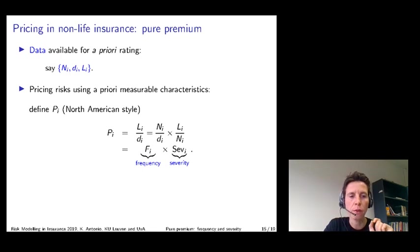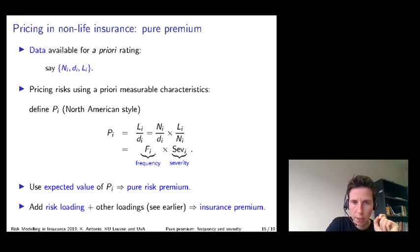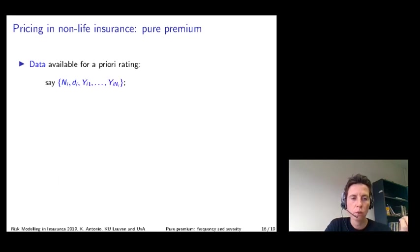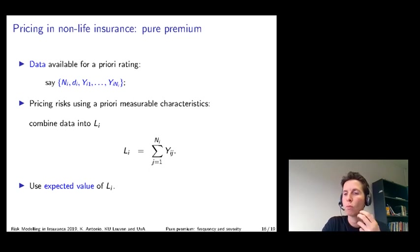The expected value of the random variable P will then give you the so-called risk premium or pure premium. Besides having the data available in this particular format, you can also have the data being registered and stored with some additional granularity. Instead of only storing the aggregate loss LI, you can have the detailed losses Y1 up to YNI at your disposal. In that case, we are going to combine the data into the random variable LI using this compound sum. It is a compound sum because it is a sum of random variables, but the number of terms in the sum is a random variable itself.